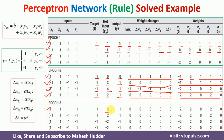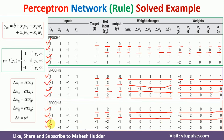In the third iteration, with the new weights, the net input for the first input is 2. Since 2 > 0, output = 1, and target = 1 — they match, so no weight update needed. For the second input, net input = 2, output = 1, target = 1 — matching, no update. The same holds for the remaining two inputs. Since there is no weight update in this entire iteration, the weights are finalized.